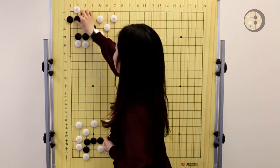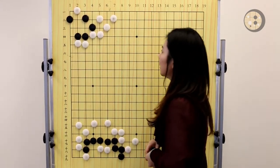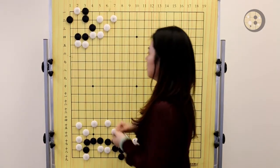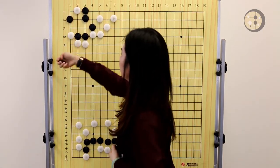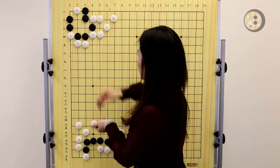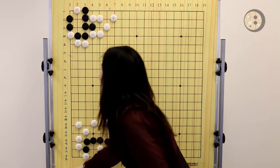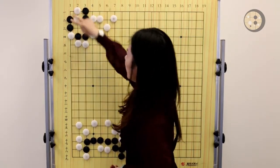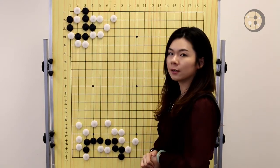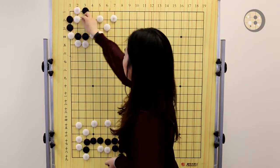How can we make a live then? If we just simply block, that's not correct either because white can reduce the eye space to the bent four. White is taking the two vital points in a bent four shape. So that's not correct either.